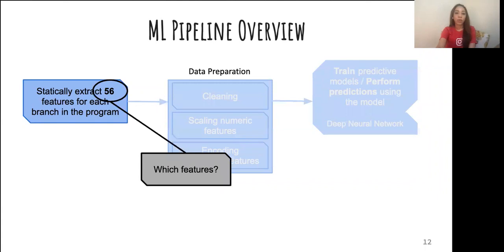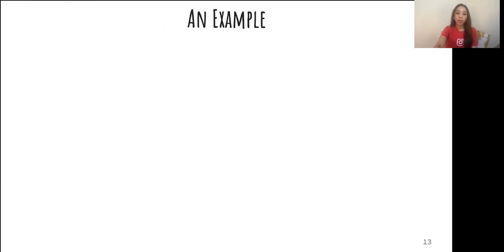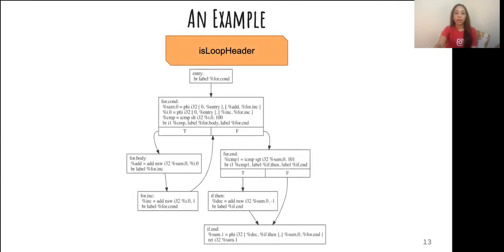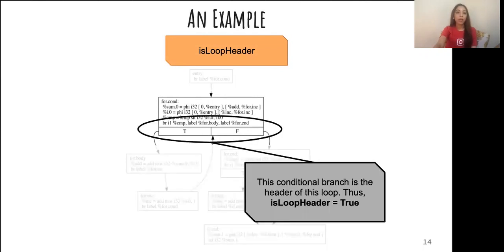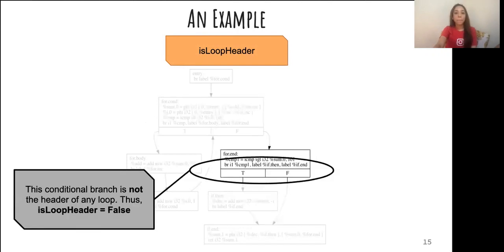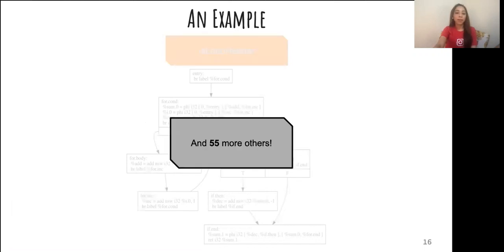I know 56 features is a lot of features to go over, but they typically look like this. There are features which are highly significant, such as is loop header feature, which determines whether the branch is header of a loop in the program. That would be true for this branch, but also for this one. There are 55 more features to go over.